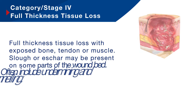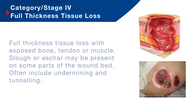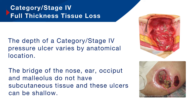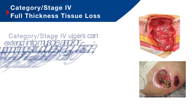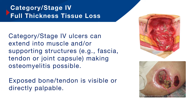Category four pressure ulcers — this is full thickness tissue loss with exposed bone, tendon or muscle. Slough or escar may be present on some parts of the wound bed, and often these ulcers include undermining and tunnelling. The depth of the category four pressure ulcer can vary by anatomical location; in areas without subcutaneous tissue, ulcers can present quite shallow. Category four ulcers can extend into muscle and/or supporting structures — for example, the fascia, tendon or joint capsule — making osteomyelitis possible. Exposed bone and tendon is visible or directly palpable.